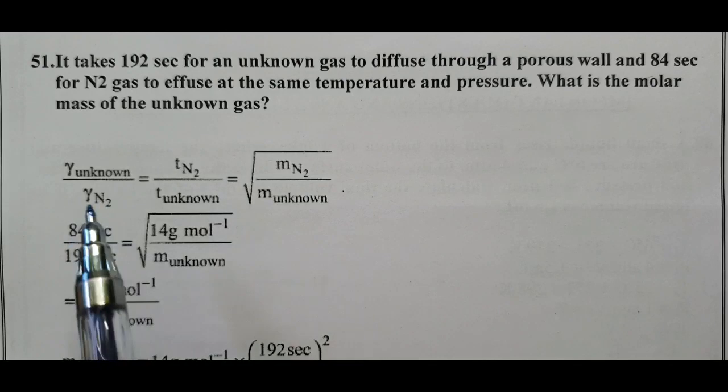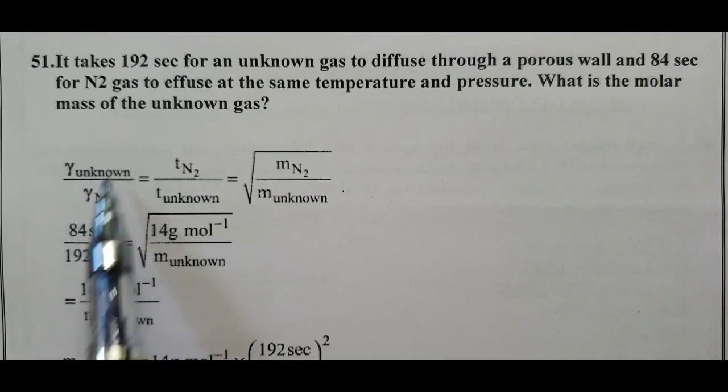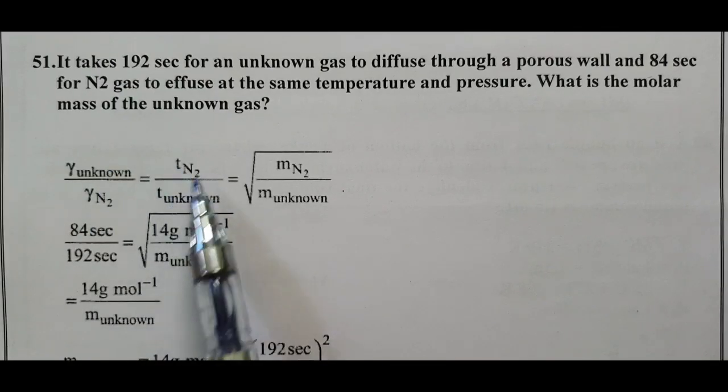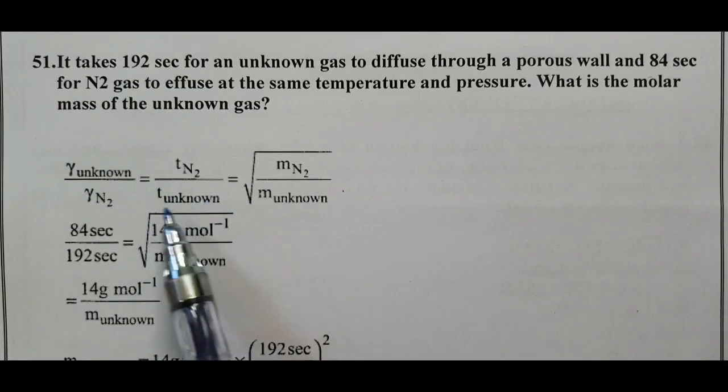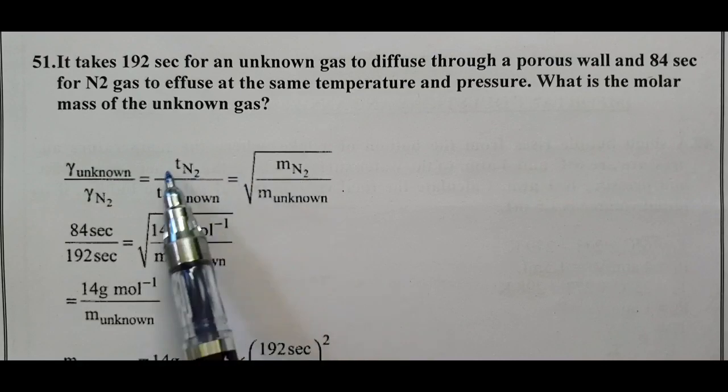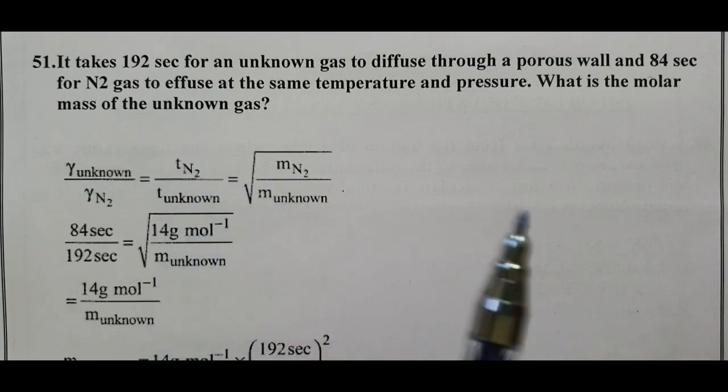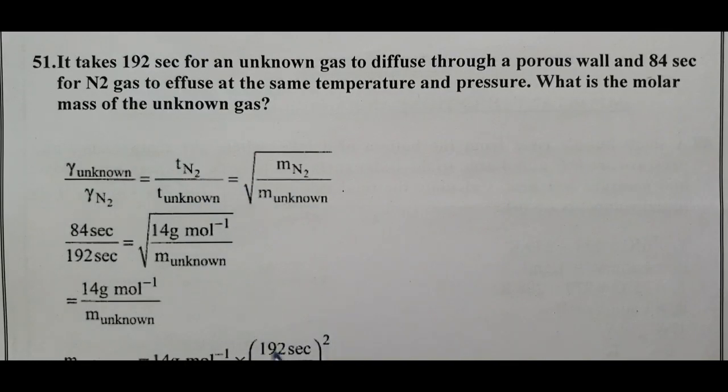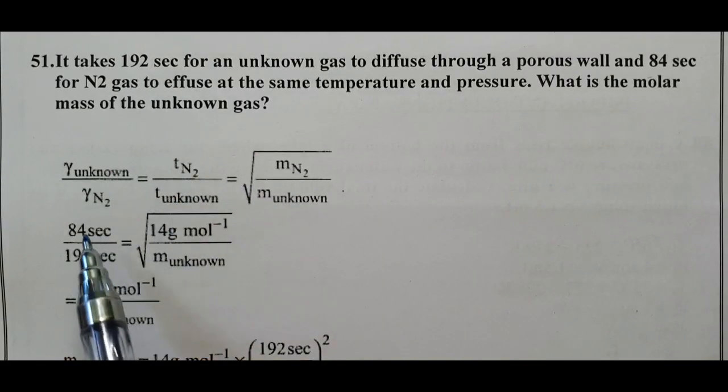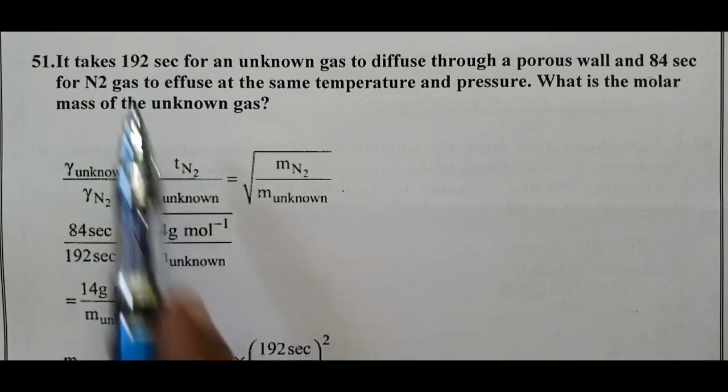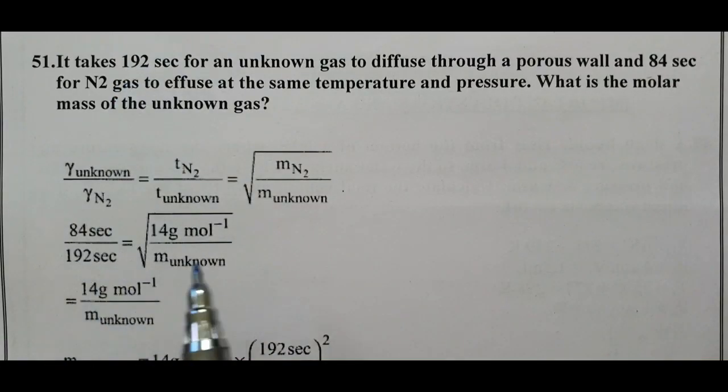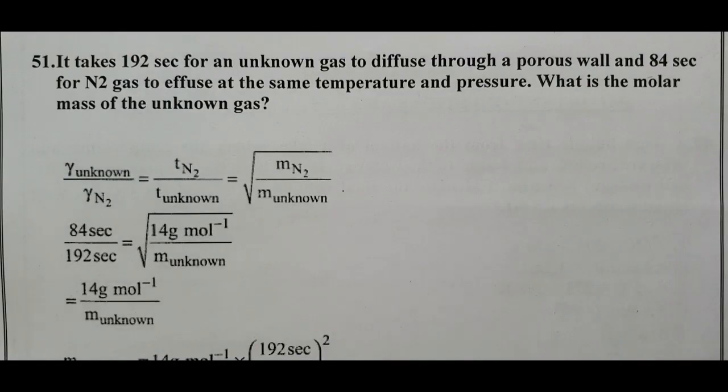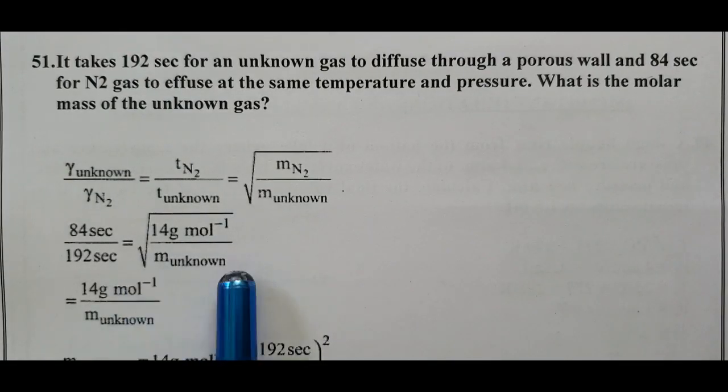To effuse at the same temperature and pressure, what is the molar mass of the unknown gas? We know rate of unknown gas divided by rate of N2 is also written as time of N2 divided by time of diffusion of unknown gas. It is inversely proportional to molar mass. Time of N2 is 84 seconds. Time of unknown gas is 192 seconds.